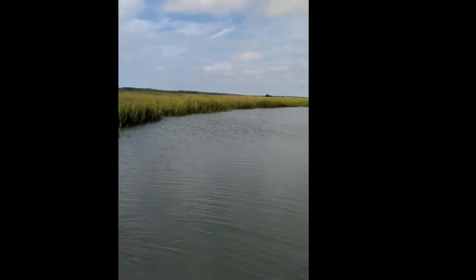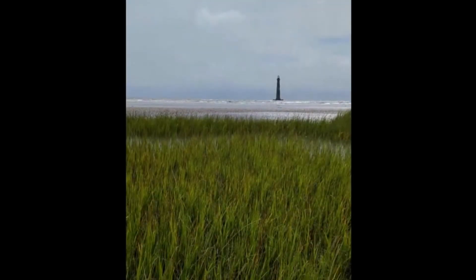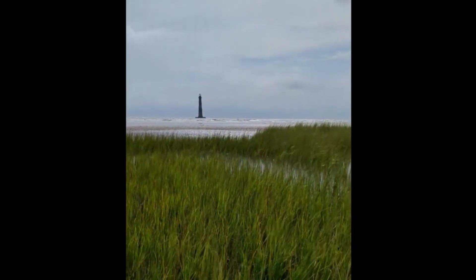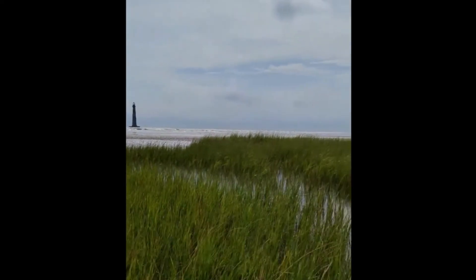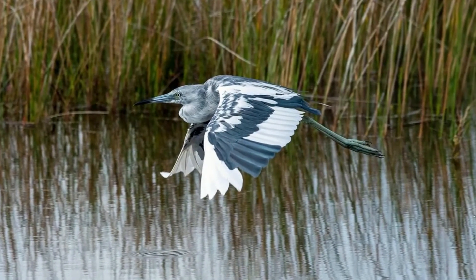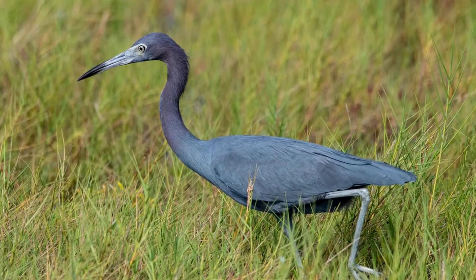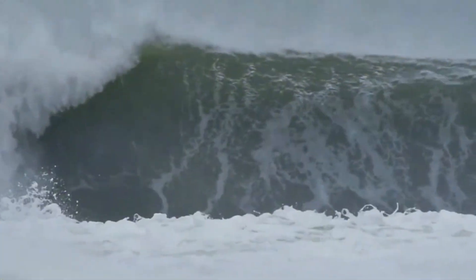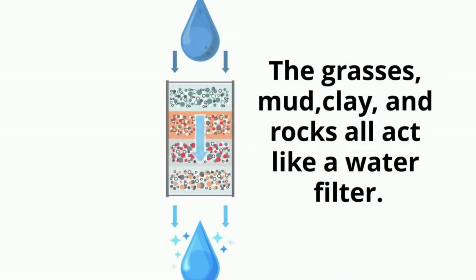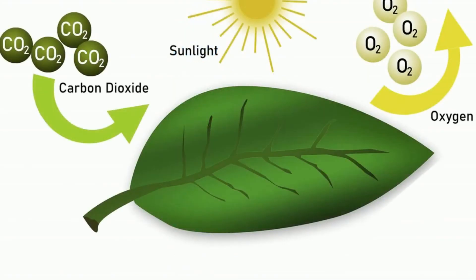The salt marsh is found between the ocean and the mainland, going all the way to the ocean. Salt marshes are important ecosystems that provide a variety of benefits, which include habitat for wildlife including birds, fish, and even dolphins; protection from storms and erosion; a great water filtration system; and carbon storage, because all the plants take in carbon dioxide and release oxygen during photosynthesis.